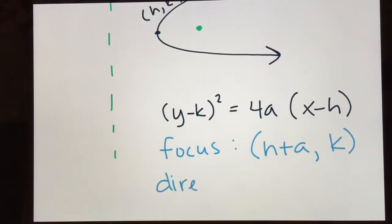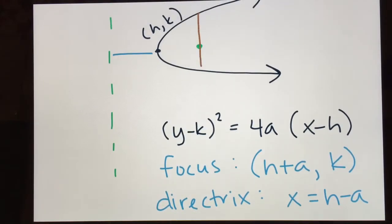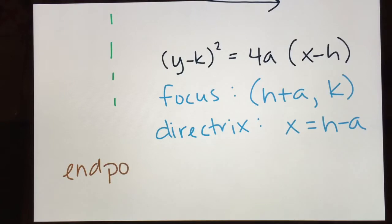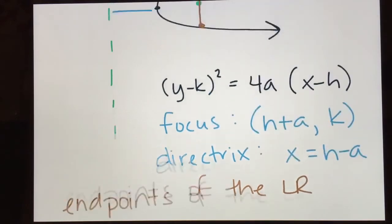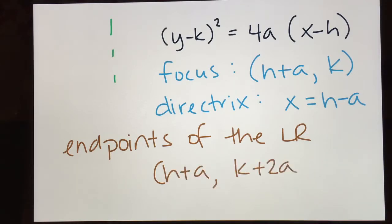The directrix is a vertical line this time, so its equation is x equals a number. The x-value is to the left of h by an amount of a, so x = h − a. For the endpoints of the latus rectum, we take the focus and go up and down a length of 2a. So the endpoints are (h + a, k + 2a) and (h + a, k − 2a).